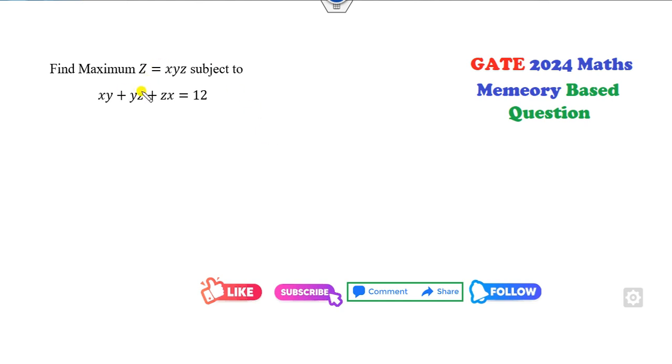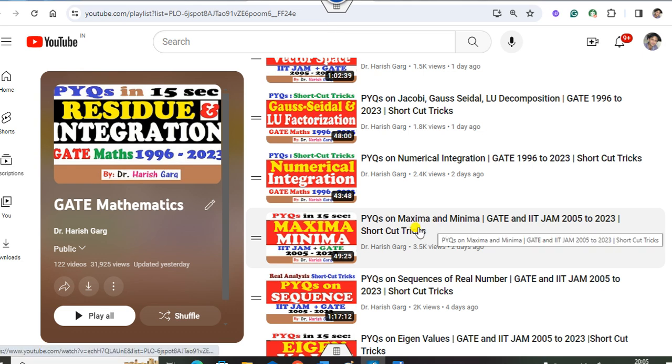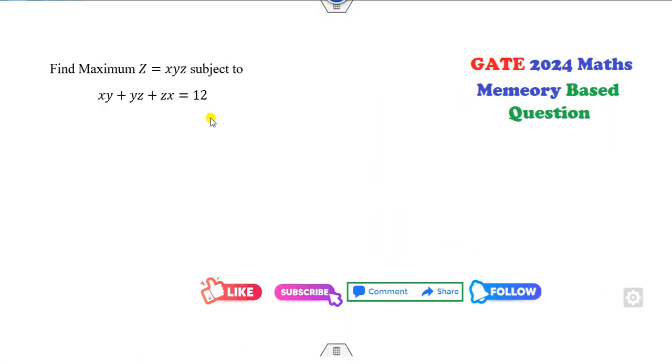This question is about finding maximize and minimize. Remember students, this is the same question I explained in my playlist PY question of maxima and minima. If you have watched this, the very first question is the same one. What is the shortcut trick I told you? The function is symmetric. So once the function is symmetric with three variables, you can substitute X, Y, and Z as equal. What is the maximum value of Z equals X cubed? What is the value of X? I can obtain from here.